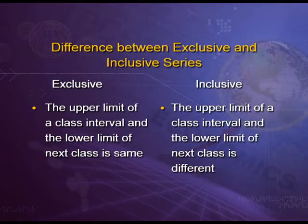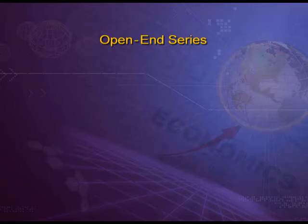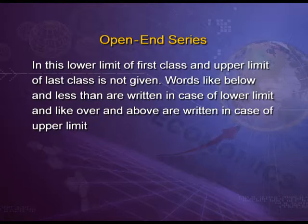In an inclusive series, the upper limit of a class interval and the lower limit of the next class interval is different. For example, it may be 10 to 14, 15 to 19 and so on. The next type of series is open end series. In it, the lower limit of the first class and upper limit of the last class is not given. Words like 'below' and 'less than' are written for the lower limit, and 'over' and 'above' are written for the upper limit.